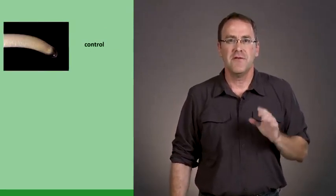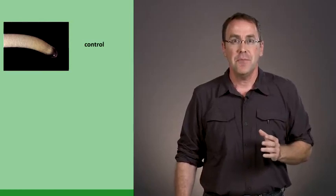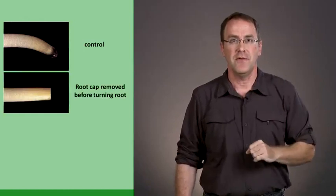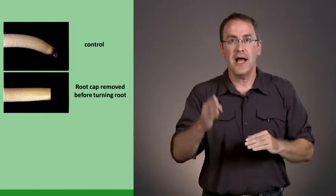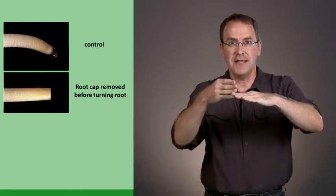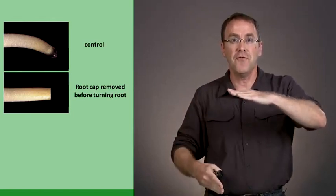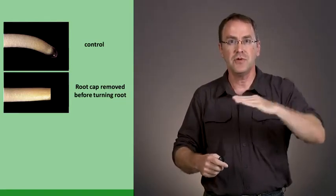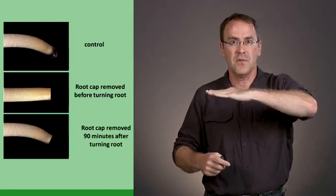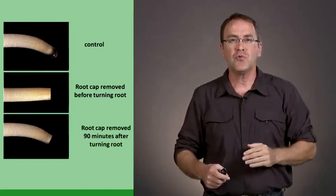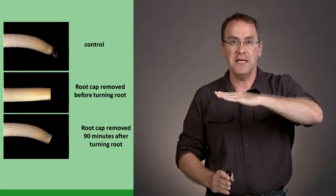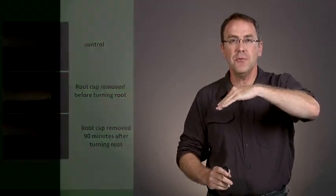To do this he did the following experiment. He placed a root on its side and saw that the roots bend down with gravity. Then he started cutting off different parts of the root. He saw that if he cut off the tip of the root before he placed it on its side, the root doesn't bend. It remains straight. On the other hand, if he placed the root on its side for 90 minutes and then cut off the tip, the root still would continue bending.